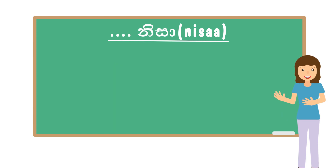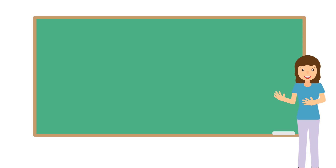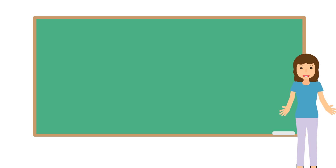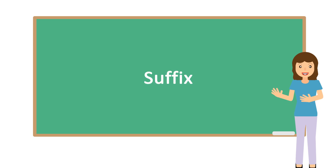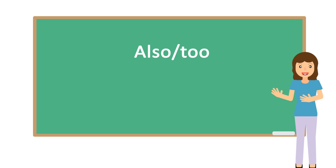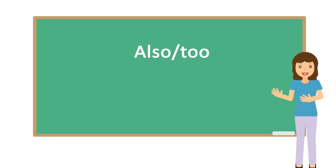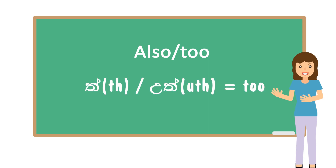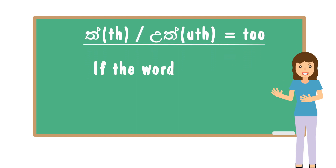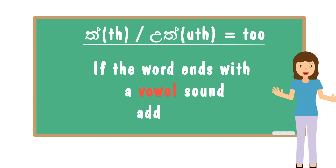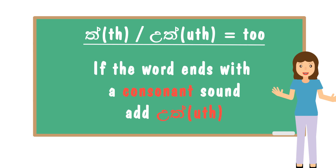Now you know how to use the word NISA. Let's look at the second word. It's not actually a word, but like a suffix you add at the end of words. To say 'also' or 'too' in Sinhala, you use one of two suffixes: UTH or UTH. If the word ends with a vowel sound, add UTH at the end. If the word ends with a consonant, add UTH at the end.